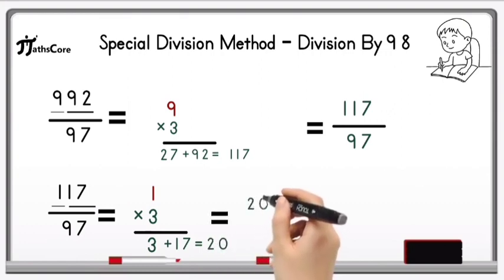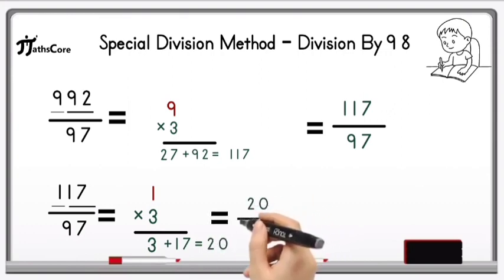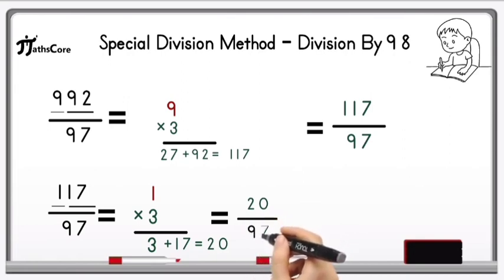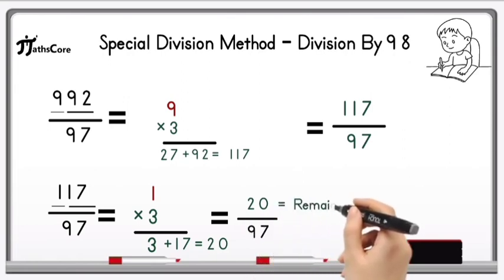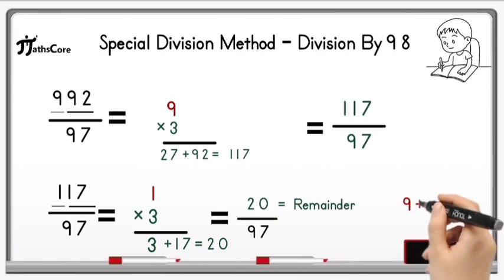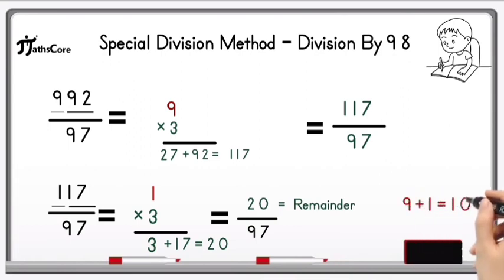Now divide this 20 by 97. But it is not possible because 20 is less than 97. So this 20 is the remainder, and to find the quotient we add 9 and 1 together. 9 plus 1 equals 10, and 10 is the quotient.